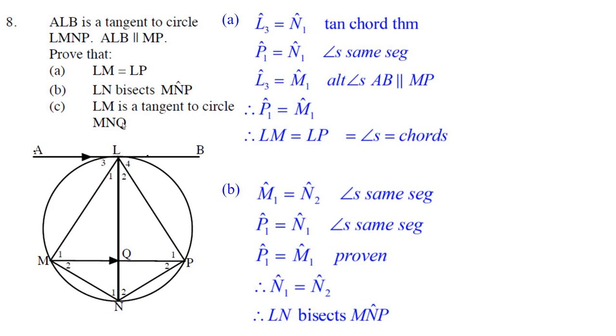Let's try this one. The last thing we're going to do is try and figure out if LM could be a tangent to the circle MNQ right here. So we're going to prove that M1 is equal to N1. But hang on here. We've proven that P1 is equal to M1, and we've proven that P1 is equal to N1 back before. Well, that means M1 equals N1.